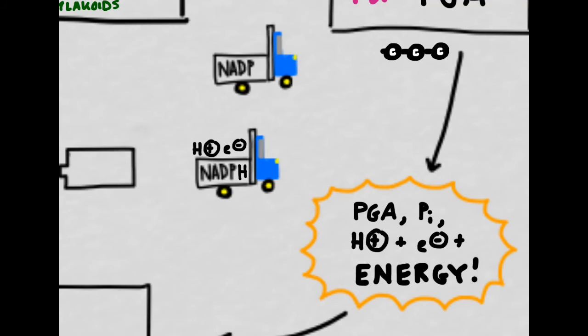So now we need to ask ourselves, where do we get the inorganic phosphate, the H+, the electrons, and the energy? And this is where the products of the light-dependent reactions are going to come into play.